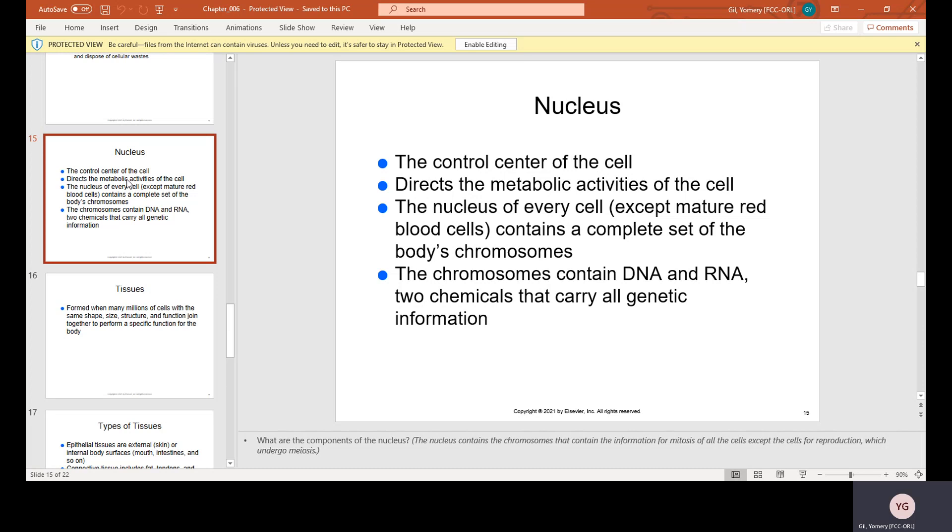Nucleus. The control center of the cell directs the metabolic activities of the cell. The nucleus of every cell, except mature red blood cells, contains a complete set of the body's chromosomes. The chromosomes contain DNA and RNA, two chemicals that carry all genetic information.